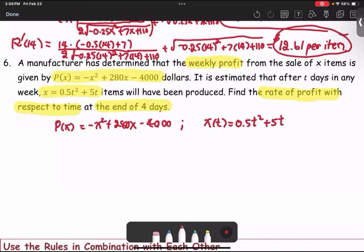We are going to find the rate of profit. Profit is P. Rate means the derivative. The problem is to find the rate of profit with respect to time. Time means the variable T. So we are going to find dP/dt at T equals 4. Our goal is to find dP/dt.